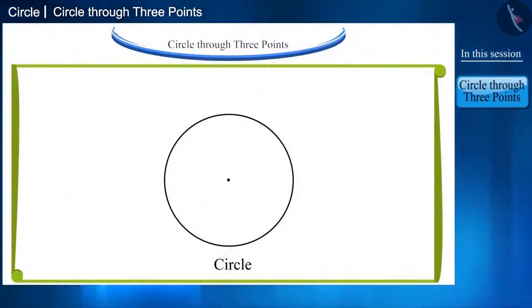According to the definition, a circle is a collection of all the points in a plane which are equidistant from a fixed point in the plane, and there are infinite points on the circle. But have you ever thought how many points will be enough to draw a circle?